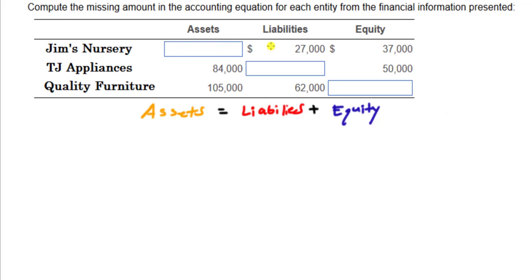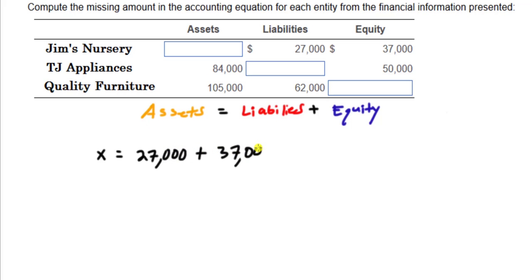Jim's Nursery: at some point in time, we know Jim's Nursery has $27,000 worth of liabilities and $37,000 worth of equity. So that means the value of all its assets is equal to liabilities plus equity. X assets equals $27,000 plus $37,000, which equals $64,000 worth of assets.